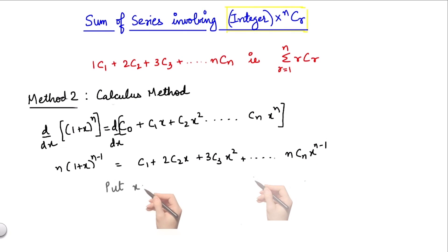If I put x equals 1, I get n times 2^(n-1) equals c1 plus 2 times c2 plus 3 times c3 until n times cn. Hence this is my required sum.